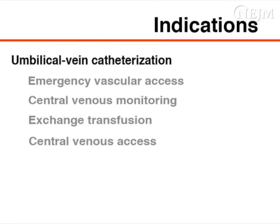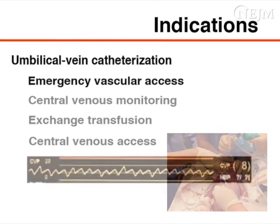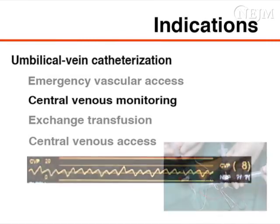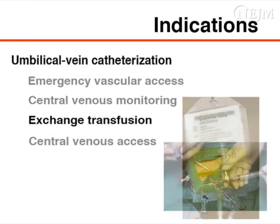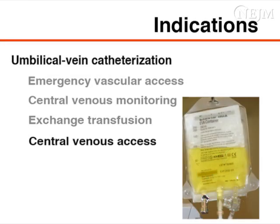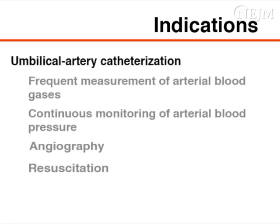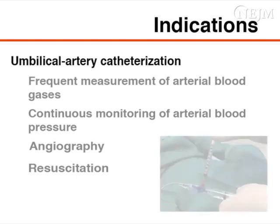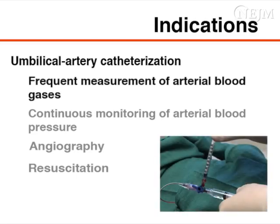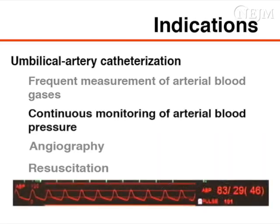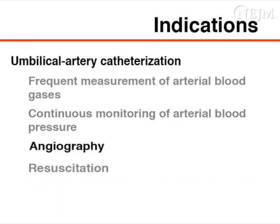Umbilical vein catheterization may be indicated for emergency vascular access, monitoring of central venous pressure, exchange transfusion, and central venous access in infants requiring long-term parenteral nutrition. Umbilical artery catheterization is indicated for frequent measurement of arterial blood gases, continuous monitoring of arterial blood pressure, angiography, and occasional resuscitation. The umbilical vein is considered the optimal vessel in an emergency situation.